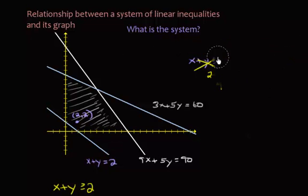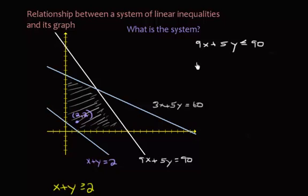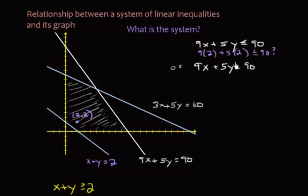Let's move on to the next inequality. That would be 9x plus 5y equals 90. As an inequality, it's going to be either 9x plus 5y less than or equal to 90, or 9x plus 5y greater than or equal to 90. We use our test point 2 comma 2: 9 times 2 plus 5 times 2 - is that less than or equal to 90? That's 18 plus 10, which is 28. Is 28 less than or equal to 90? Yes. So this inequality is the correct one.